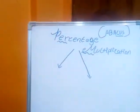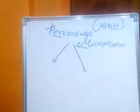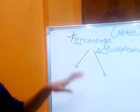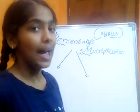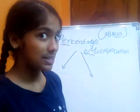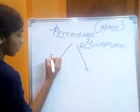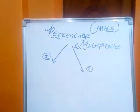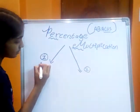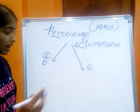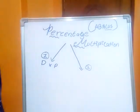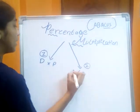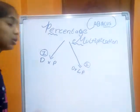Good evening everybody. Today I am telling percentage multiplication in Abacus method. Before I start, we have two types of percentage multiplications. One we will see in part 1 and one we will see in part 2. In part 1 we will discuss decimal multiplication — a decimal number into percentage. In part 2 we will discuss about less percentage — decimal number into less percentage.